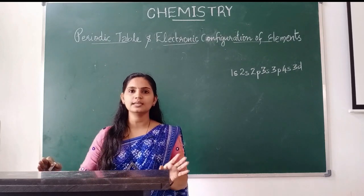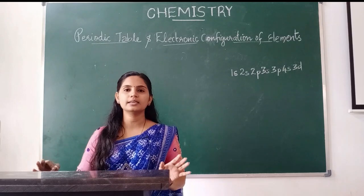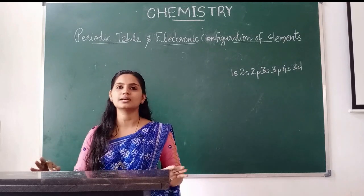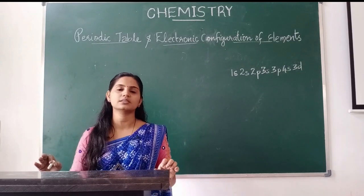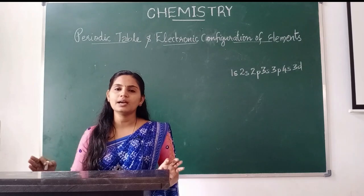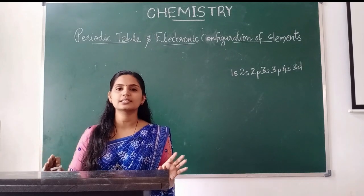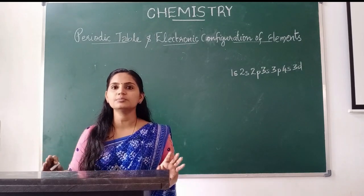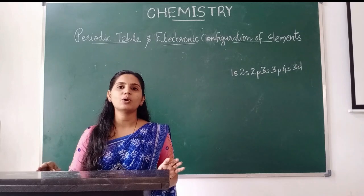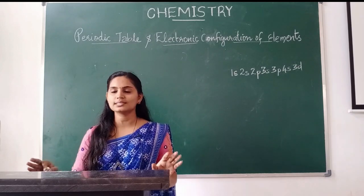To summarize: the first category is atomic numbers 1 to 18, hydrogen to argon. The second category is potassium and calcium. The third category is scandium to zinc, except chromium and copper.